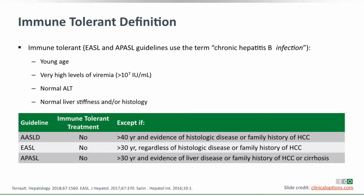The second factor is histological disease. It is important to determine whether the patient has significant inflammation or fibrosis — typically assessed today using elastography, whereas in the past we might have biopsied. If someone has evidence of disease, they no longer fit the immune-tolerant category and should be offered treatment.